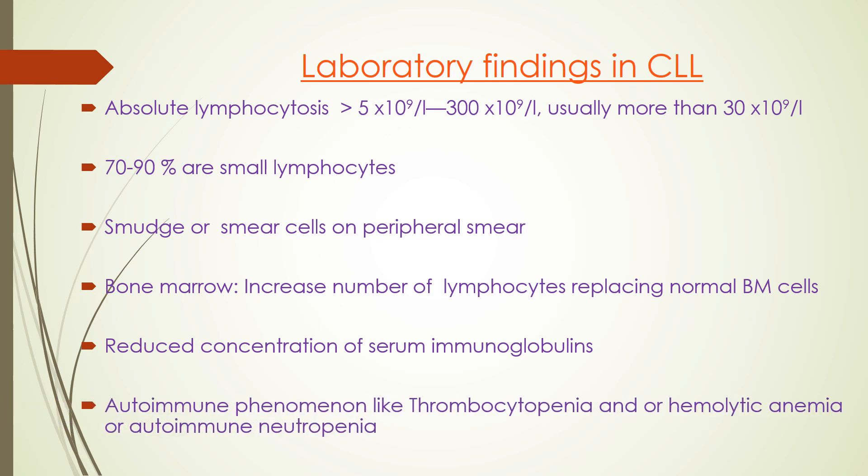These abnormal antibodies are called autoantibodies and they attack many of the patient's own body cells, leading to autoimmune phenomena such as autoimmune thrombocytopenia, autoimmune hemolytic anemia, or autoimmune neutropenia. There is also a cell called a smudge or smear cell seen on peripheral blood — it is actually an artifact produced when the blood is spread on a glass slide and some abnormal lymphocytes break, giving the shape of a smudge cell. These smudge cells may indicate the presence of CLL.